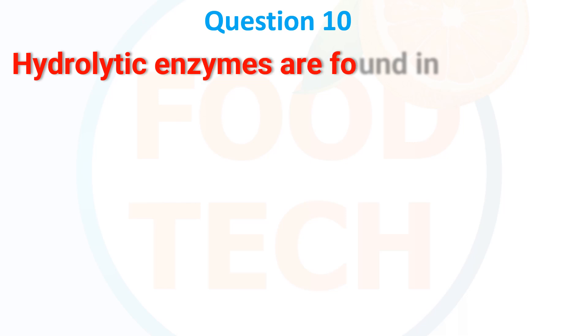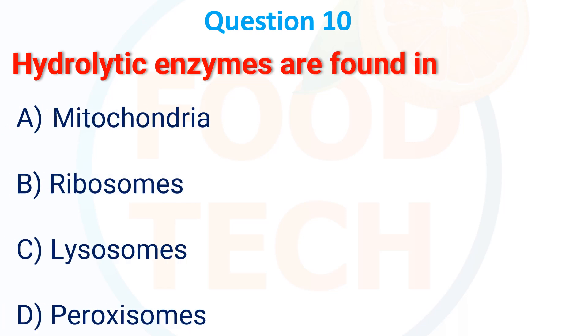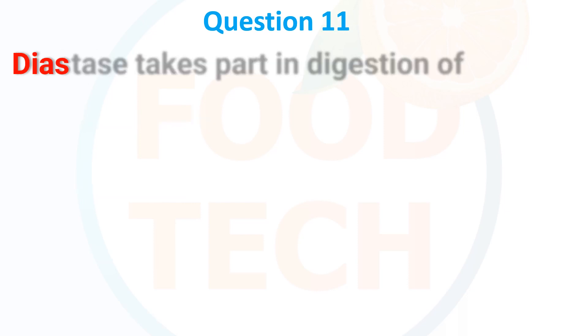Hydrolytic enzymes are found in: A. mitochondria, B. ribosome, C. glycosome, D. peroxisome. The answer is lysosome.